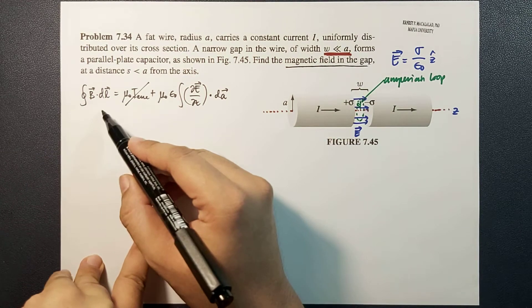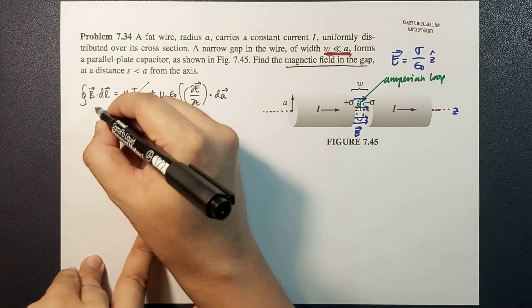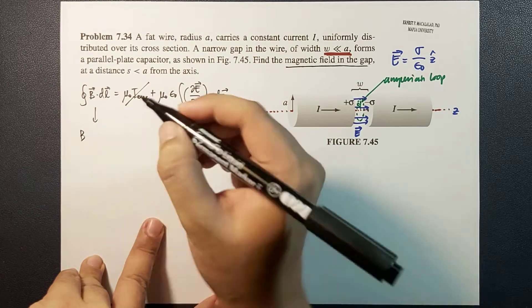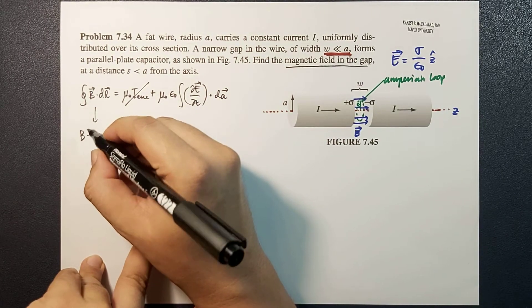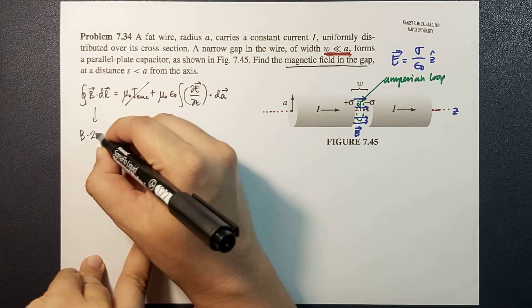The left-hand side, which is the closed integral of B dot dL, by Ampere's law is equal to B times 2 pi S.